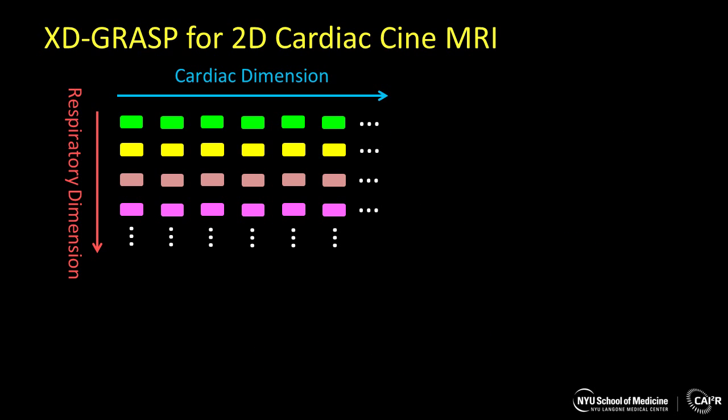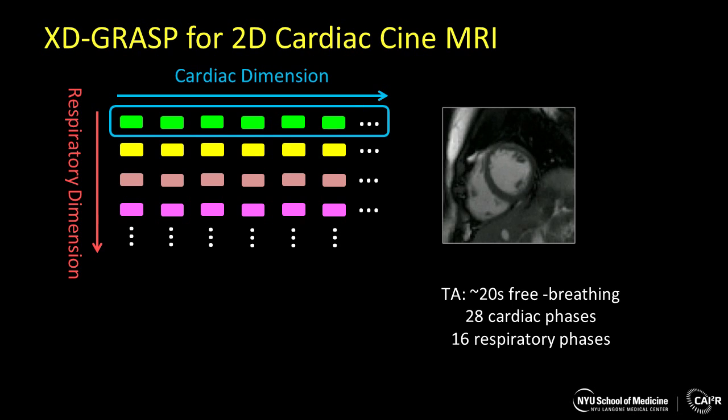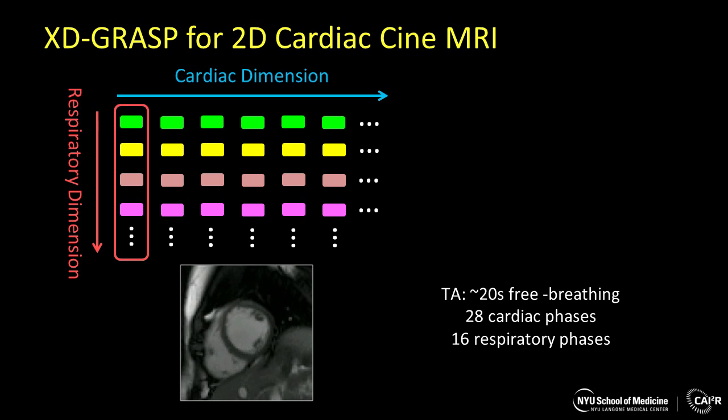Given the detected motion signals, we can sort the acquired data into a 4-dimensional image set, containing one cardiac motion dimension and one respiratory motion dimension. Compressed sensing reconstruction can be performed to exploit the correlation along these two dynamic dimensions. After image reconstruction, we can visualize the imaging along the cardiac dimension, or visualize the imaging along the respiratory motion dimension to get some additional information.